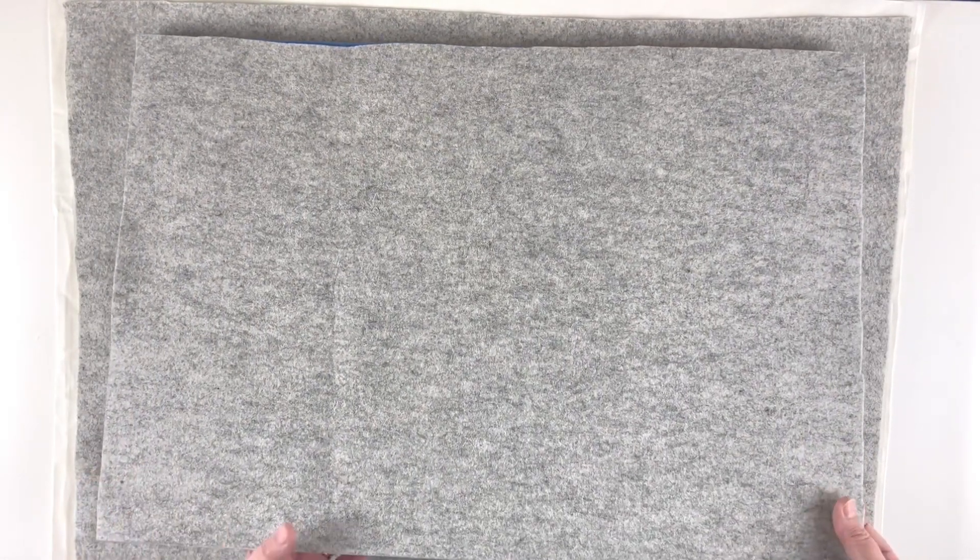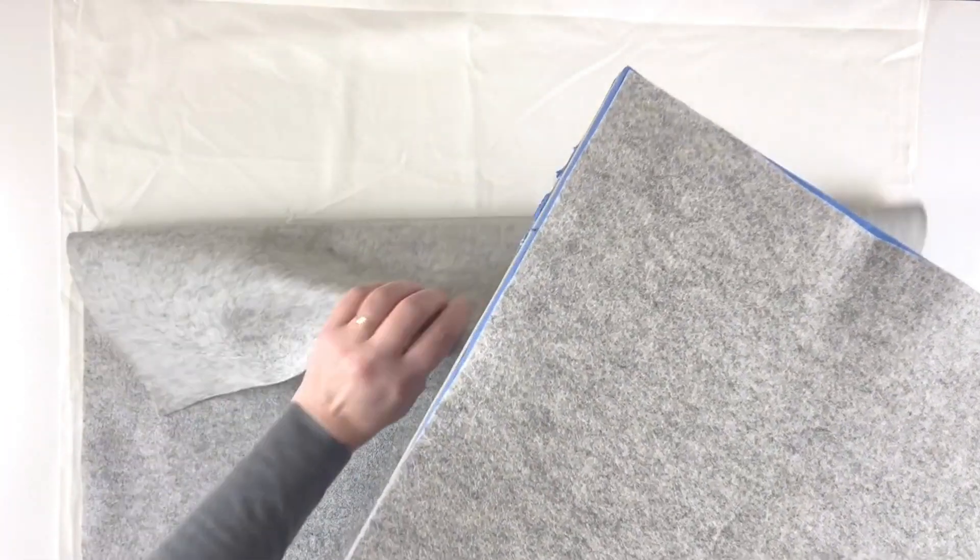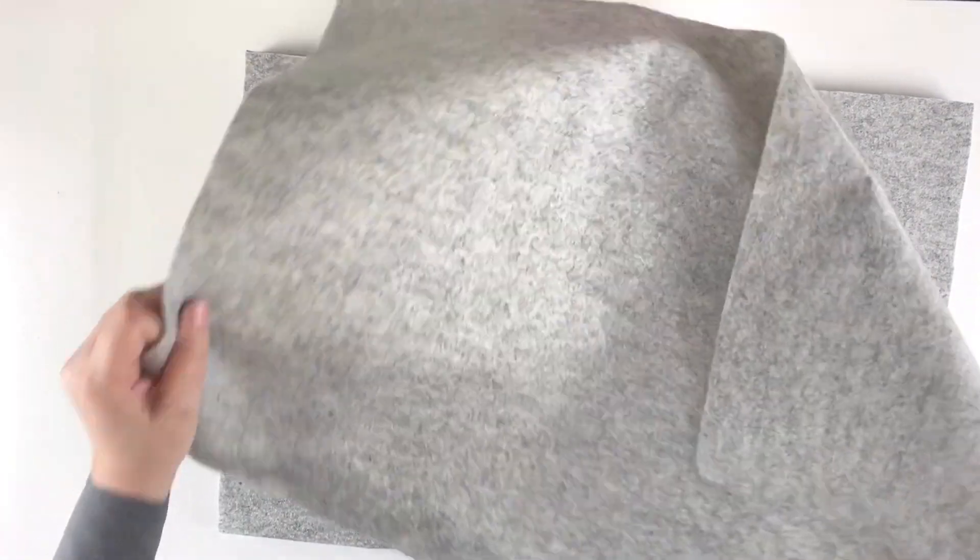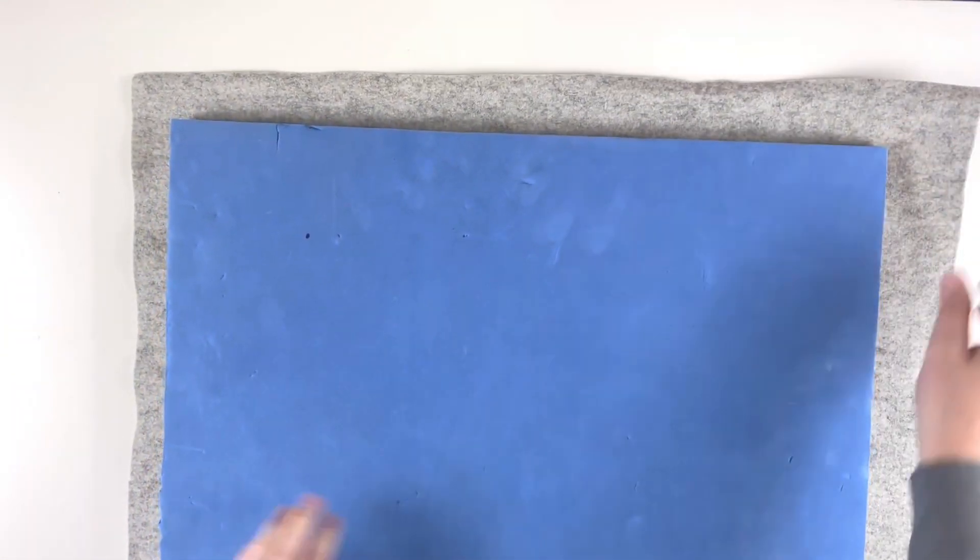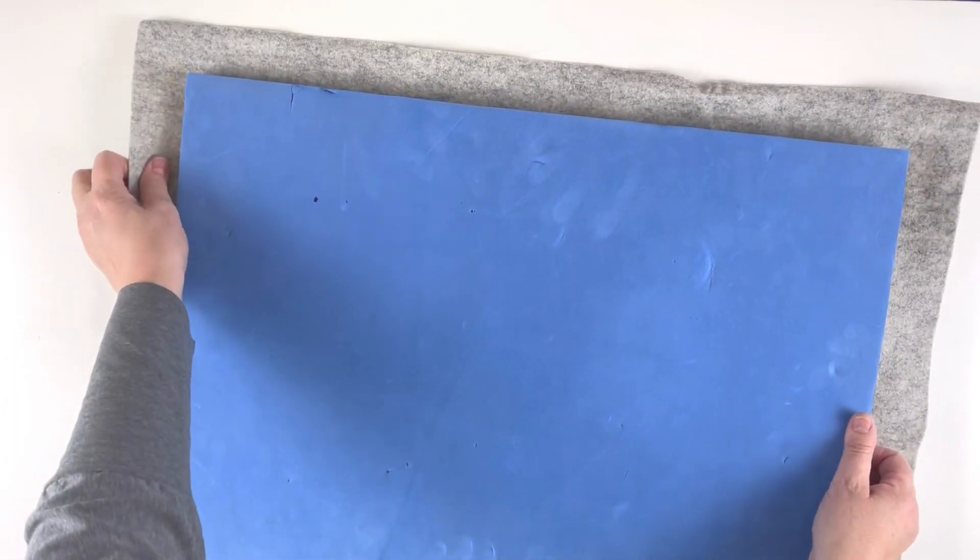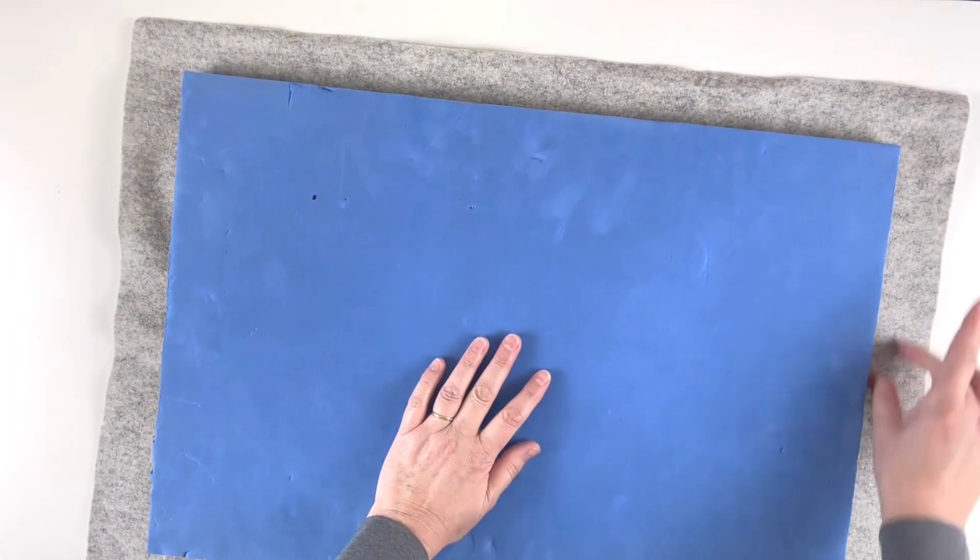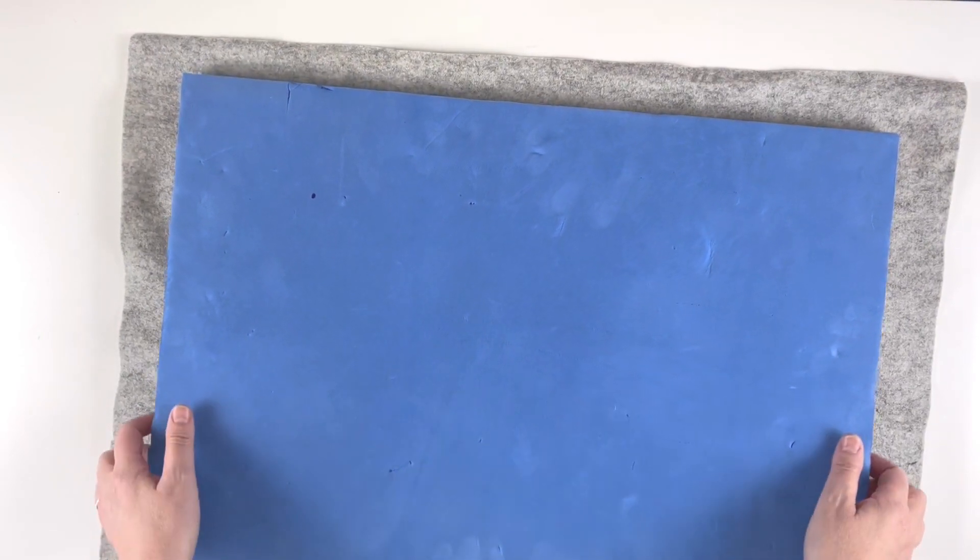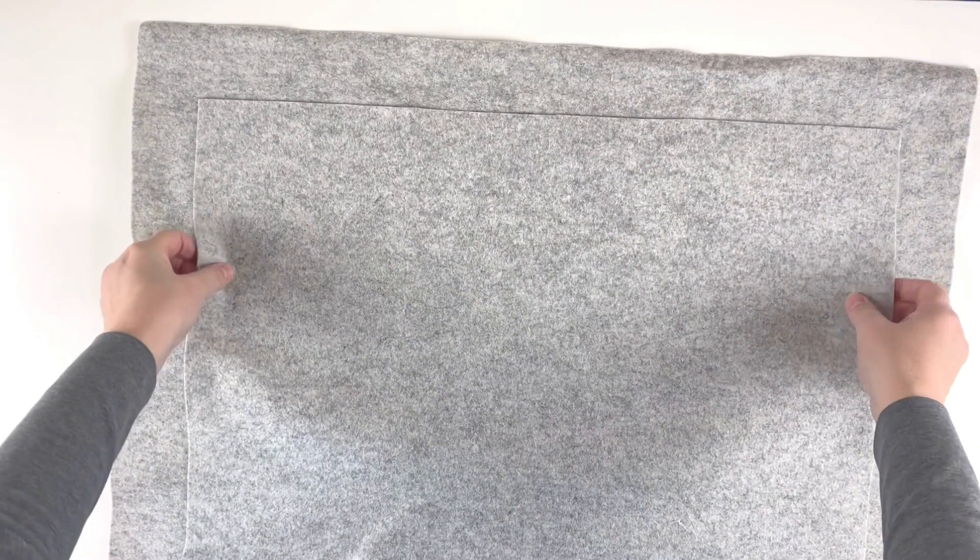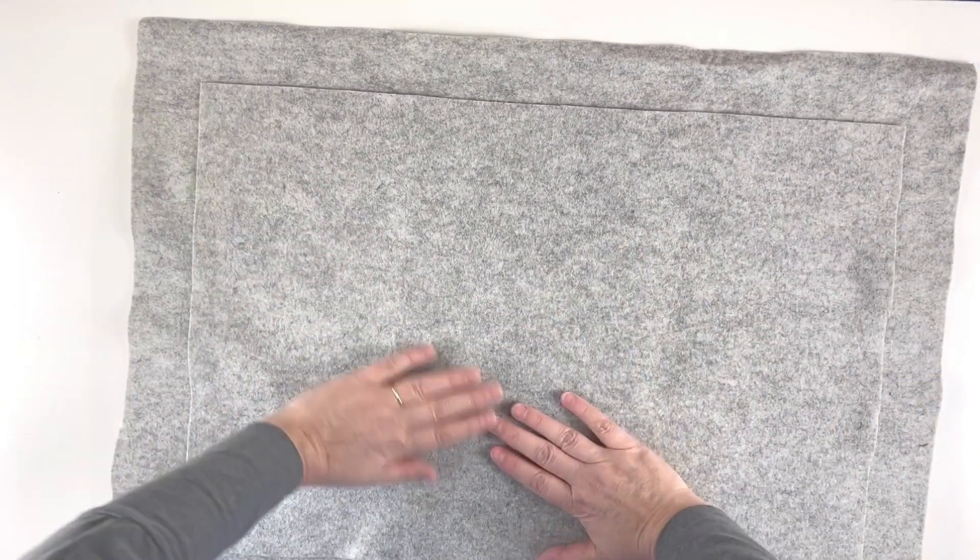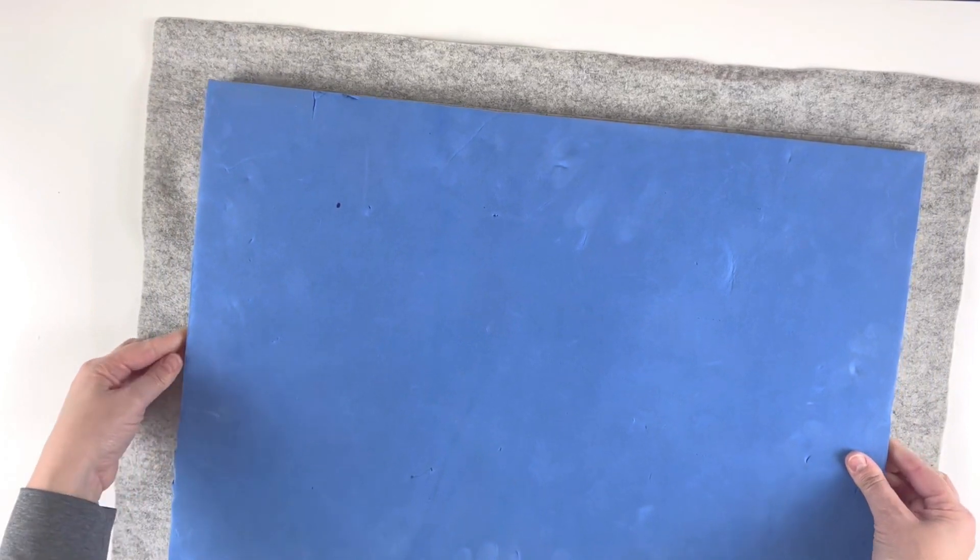Then I've got another piece of felt, the same fabric, which is about five centimeters or two inches wider all the way around. You can see there's a section all the way around that's a little bit wider. I'm going to carefully centralize that and lay it down on top.